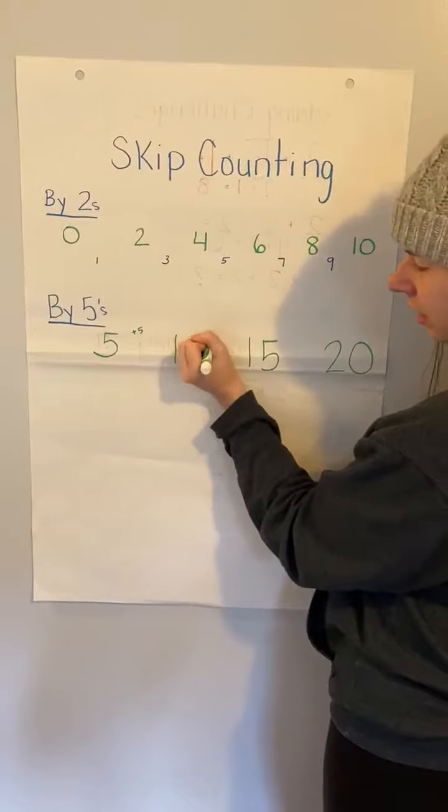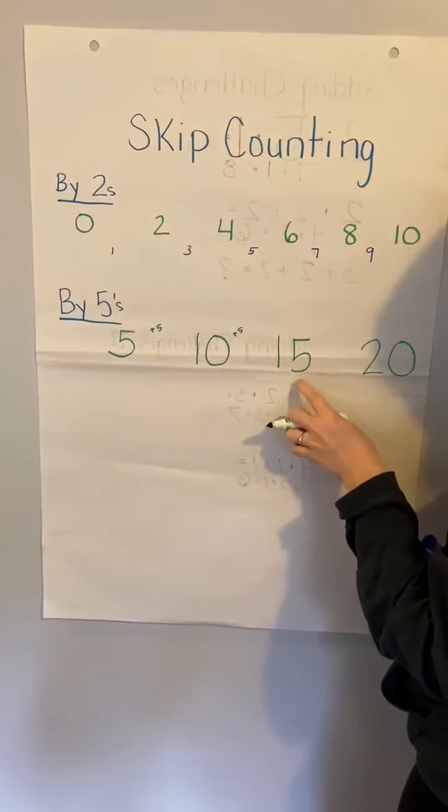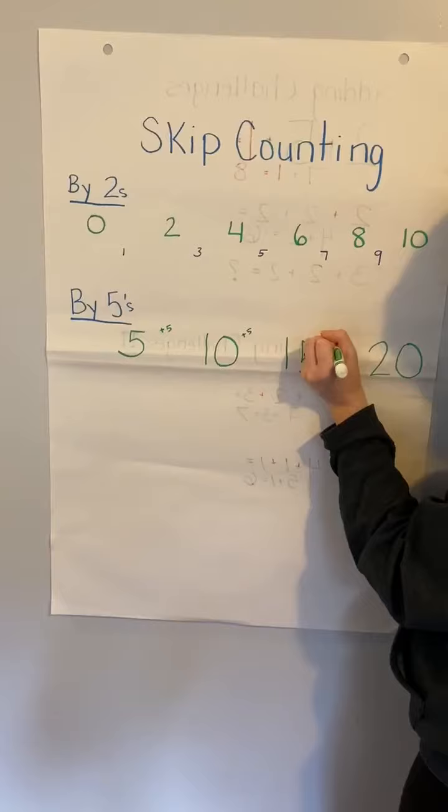Ten plus five is fifteen. Fifteen plus five is twenty.